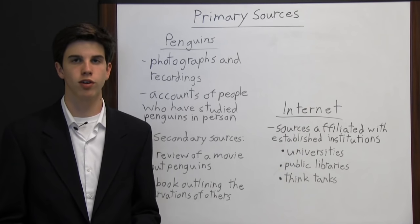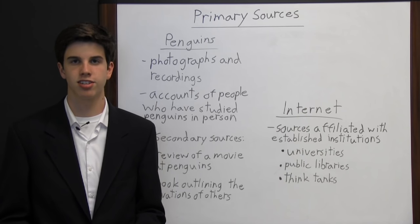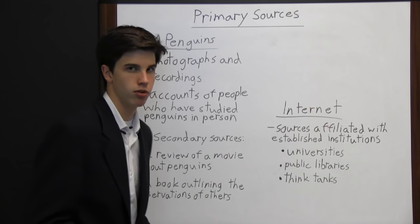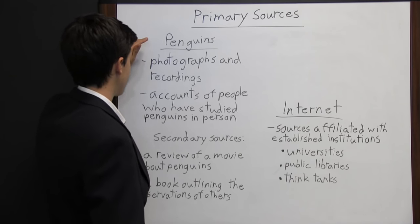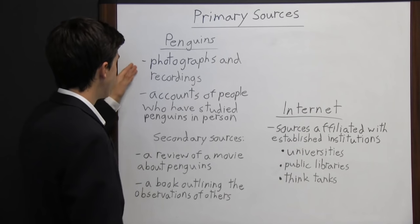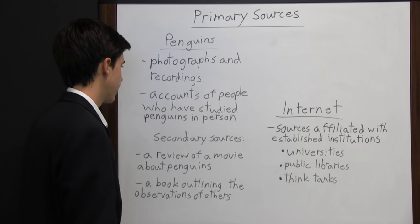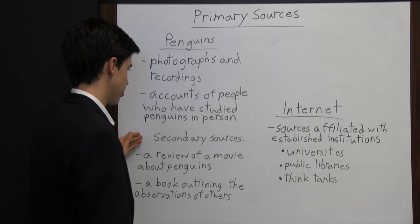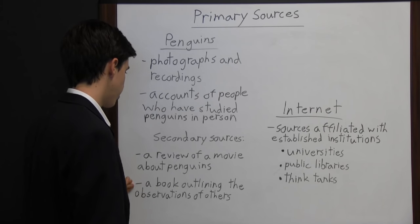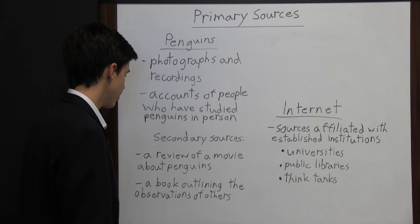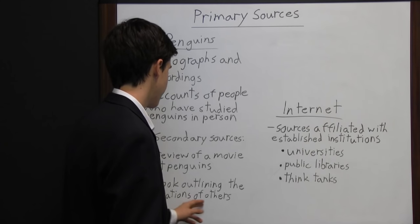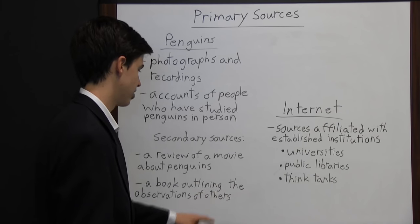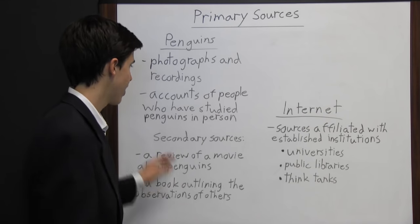When doing research, it's important to focus on primary sources, which is documentation closest to the subject being studied. Examples of primary sources are photographs, recordings, or accounts of people who saw it in person. If studying penguins, primary sources would be photographs and recordings of penguins and accounts of people who studied them. Secondary sources would be things like a review of a movie about penguins or a book outlining the observations of others — a source about another source.